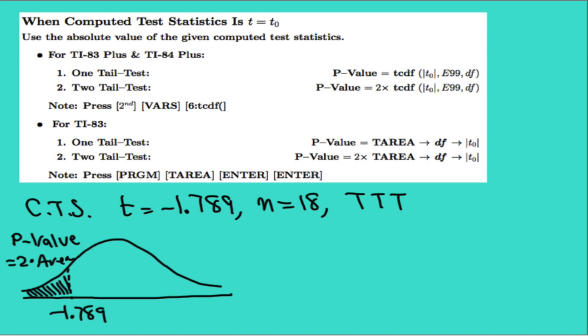Again we're going to use the symmetry, we're going to go to the other side and we're going to find the area from 1.789 to the right. So p-value will be equal to two times, now we're going to go to the TCDF function. Our lower value is 1.789, our upper value will be E99 followed by the degrees of freedom, in this case 17, and the corresponding p-value is 0.0914.